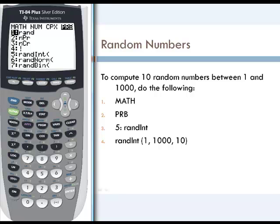Then we're going to use the randint function because we want to find random integers, and that's option five. This function takes in the minimum value that we're looking for, the maximum value that we're looking for, and the amount of random integers we want our calculator to generate.